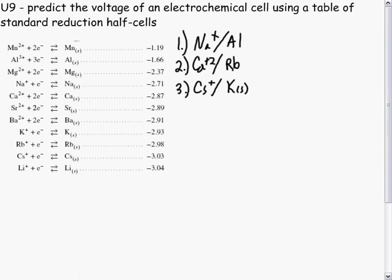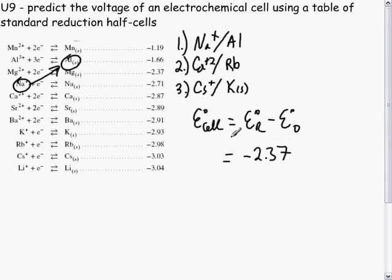Okay, to calculate the E naught of a cell, is equal to the E naught of the reduction minus the E naught of the oxidation, which is equal to, for sodium plus one and aluminum. This would be a non-spontaneous reaction, and it minus 2.37 minus negative 1.66. The answer would be negative 0.71 volts.